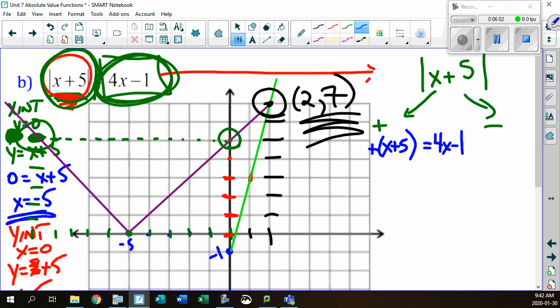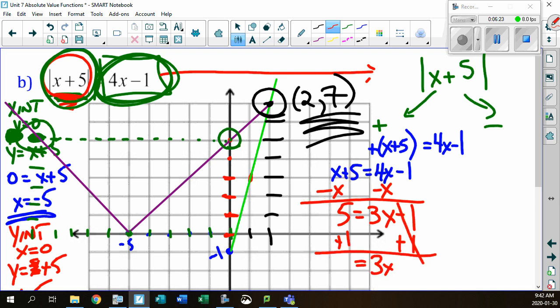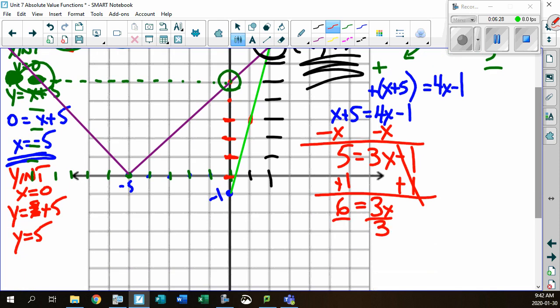Take the positive version of x plus 5. There's your positive version. That's going to equal to your 4x minus 1. If you were to solve this real simple, look. The x plus 5 doesn't change. Bring the x over. So minus x minus x. This gives you 5 equals to 3x minus 1. Add 1 to both sides. That's gone, leaving you 3x equaling to 6. Divide by 3. x equals to 2.